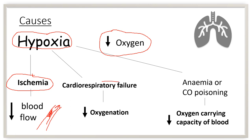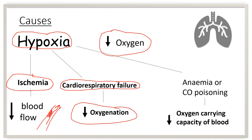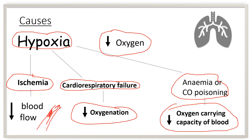The second cause of hypoxia is cardiorespiratory failure — due to diseases of the heart and lungs, enough oxygen is not reaching the cells, so there is decreased oxygenation. Thirdly, anemia or carbon monoxide poisoning can cause hypoxia. In anemia, there is decreased hemoglobin concentration. In carbon monoxide poisoning, hemoglobin has more affinity for carbon monoxide than oxygen, so there is reduced oxygen carried by hemoglobin, less reaches the cells, and the cell undergoes hypoxia. In summary, hypoxia is caused by ischemia, cardiorespiratory failure, and anemia or carbon monoxide poisoning.